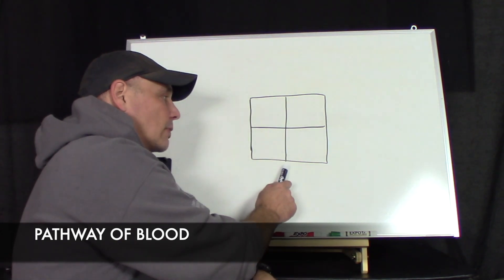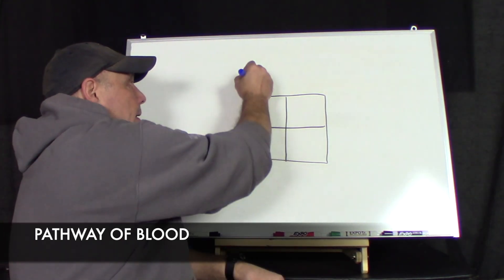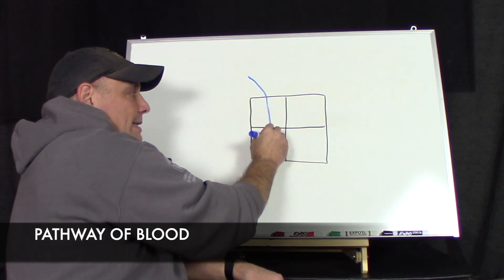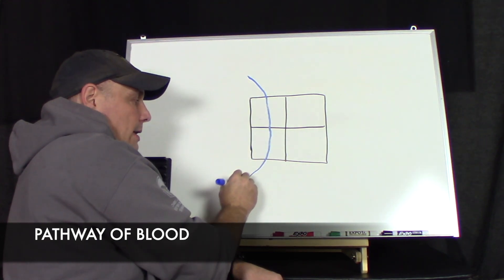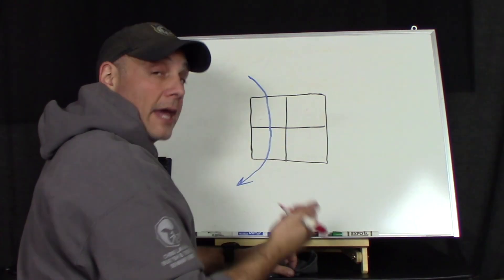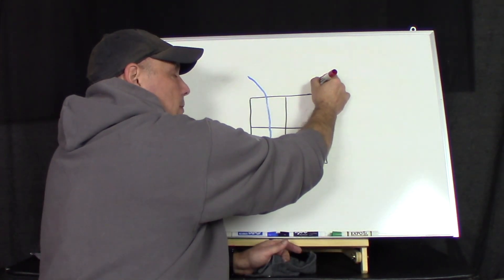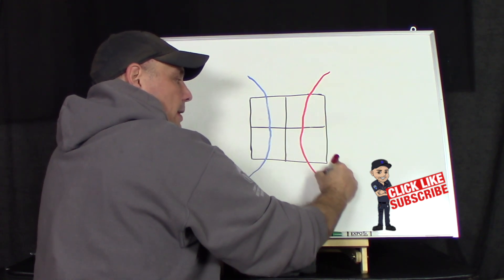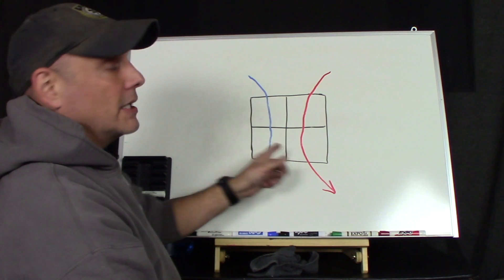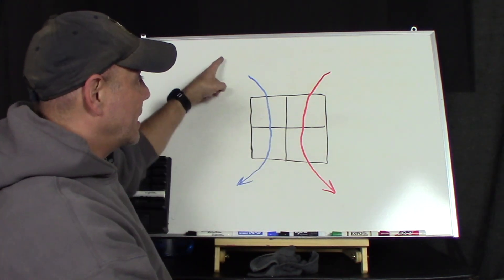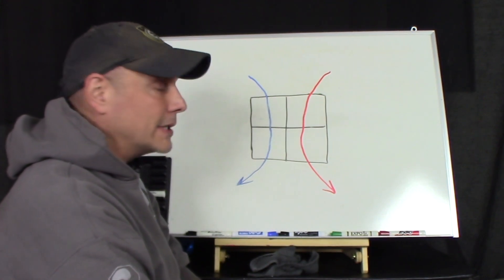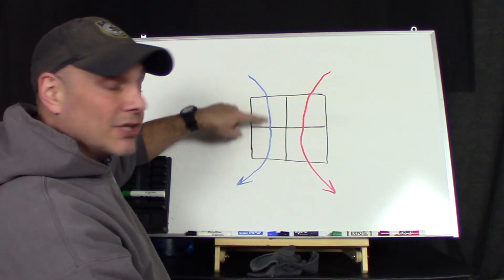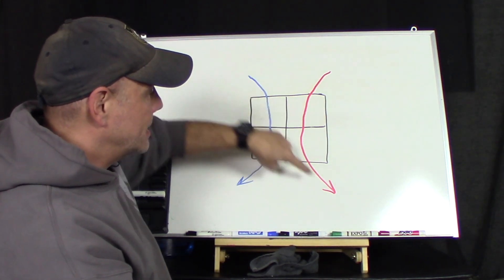Now let's go back to our square diagram of the heart. Blood is going to come in to the right atria. Then it's going to pass down into the right ventricle. And then it's going to get pumped out of the heart. Then blood is going to come back to the heart through the left atria, pass down into the left ventricle, and then back out. I actually made these red and blue so you can kind of get an idea. The blue is the deoxygenated blood and the red is the oxygenated blood.